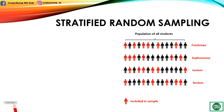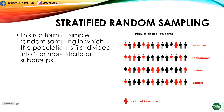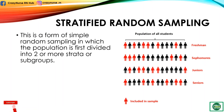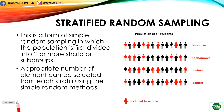Next is stratified random sampling. It is a form of simple random sampling in which the population is first divided into two or more strata or subgroups. An appropriate number of elements can then be selected from each stratum using the simple random method.